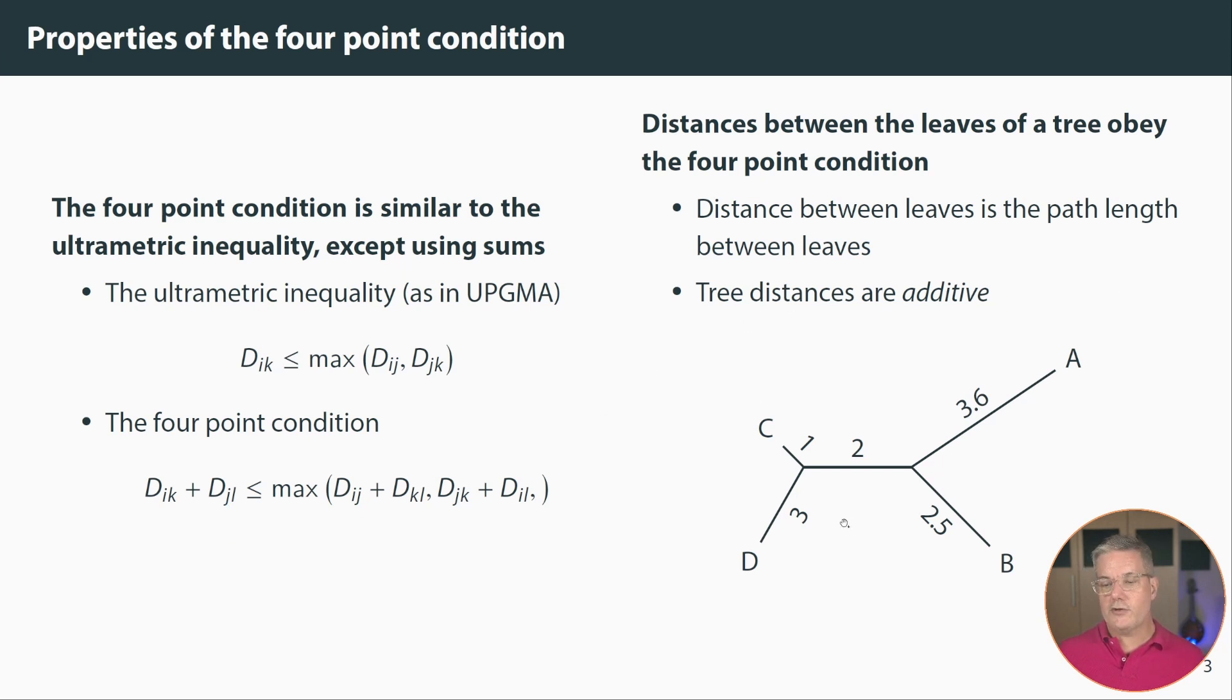Importantly, if we construct a tree like this tree with four leaves and we consider the path length between any two leaves as the distance between them they will obey the four-point condition. So another way of putting this is that tree distances are additive. The path length is just the length as we move along the path between them and you can check this out for yourself and satisfy yourself that it's the case.